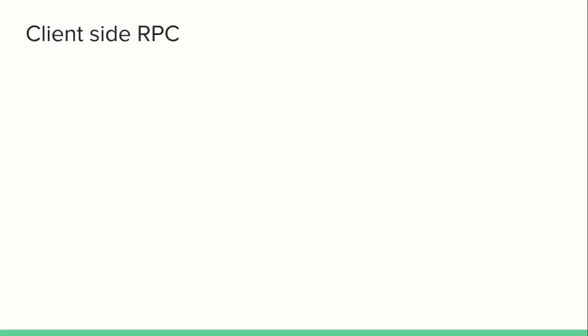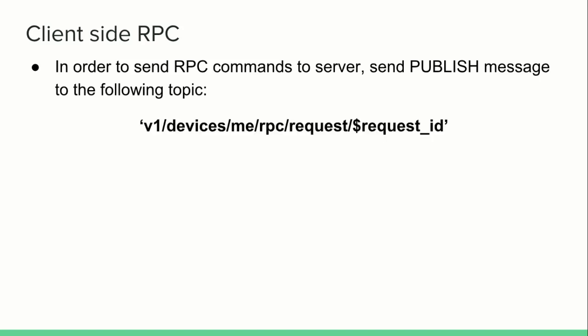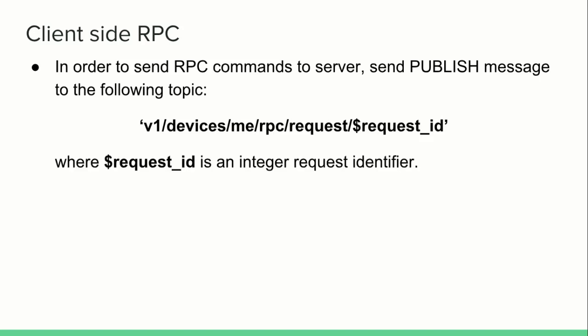ThingsBoard supports MQTT, HTTP, and CoAP protocols. In this illustration, I am using the MQTT protocol API. In client-side RPC, the client will be the originator, so the device has to send an RPC request to ThingsBoard. In order to send an RPC command to the server, we need to publish a message to the following topic, where the request ID is an integer request identifier — it can be any integer.